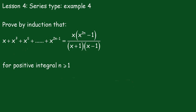Lesson 4, Series Type Example 4: Prove by induction that x plus x cubed plus x to the power 5, plus all the way along to x to the power 2n minus 1, is equal to x times (x to the 2n minus 1) all over (x plus 1)(x minus 1), for positive integral n greater than or equal to 1.